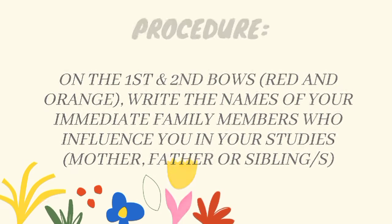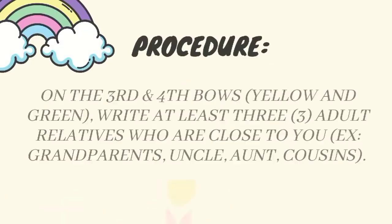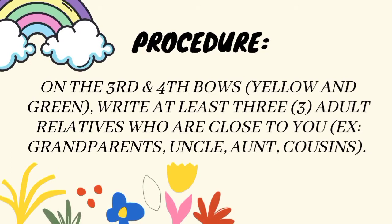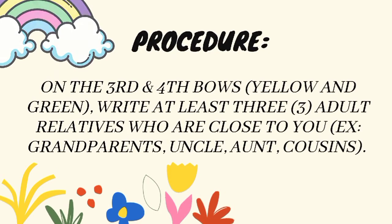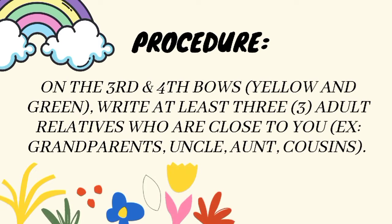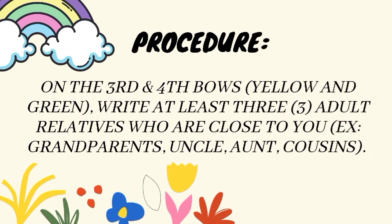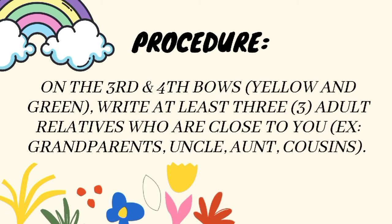Number 3: On the third and fourth bows — yellow and green — write at least three adult relatives who are close to you, for example your grandparents, uncle, aunt, and other cousins.